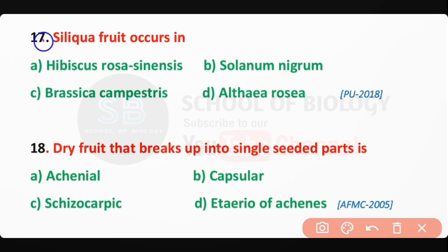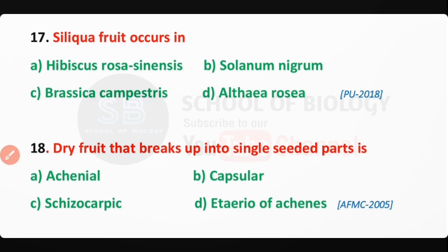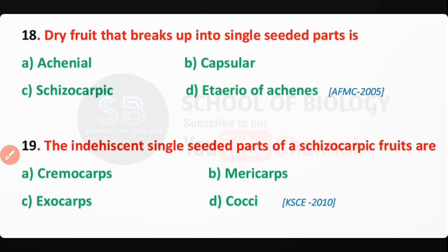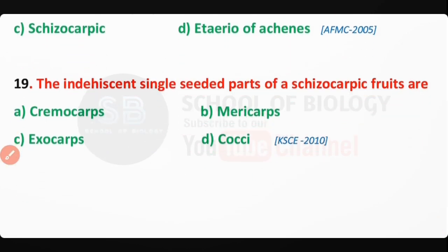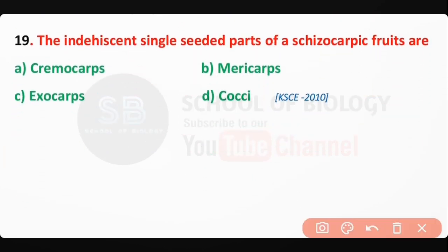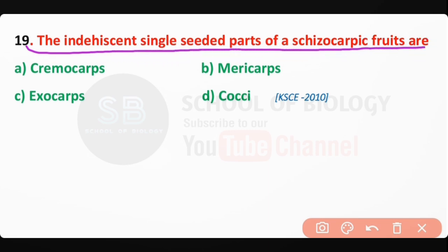Q17: Siliqua fruits occur in Brassica (Compositae) — correct answer is option C. Q18: A dry fruit that breaks up into single-seeded parts is known as a schizocarpic fruit — correct answer is option C. Q19: The indehiscent single-seeded parts of schizocarpic fruits are known as mericarps — correct answer is option B.